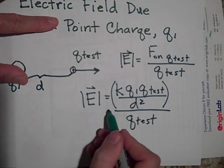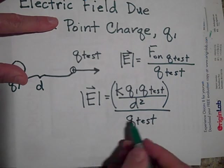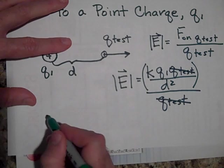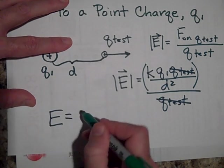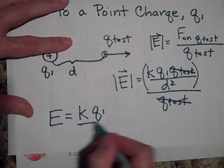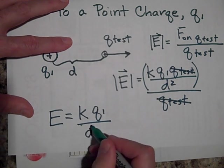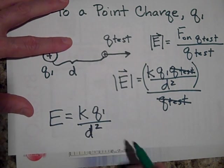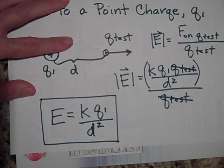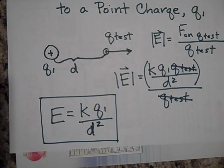I guess that equals sign should be here more. Anyways, the Q test disappears, it cancels out. So the electric field due to a point charge is going to be just K, Q1, all over D squared or R squared. That's how you find the electric field due to a point charge. Thank you.